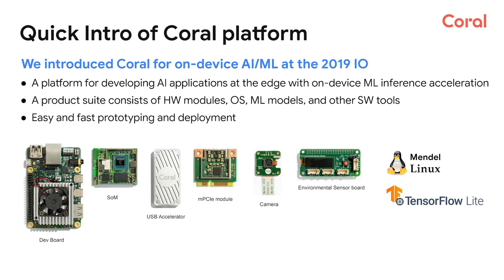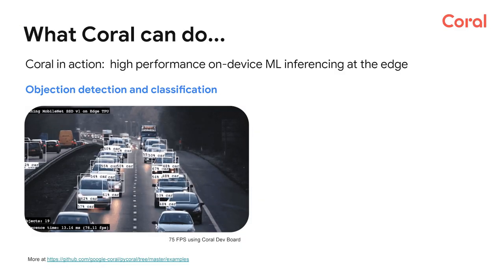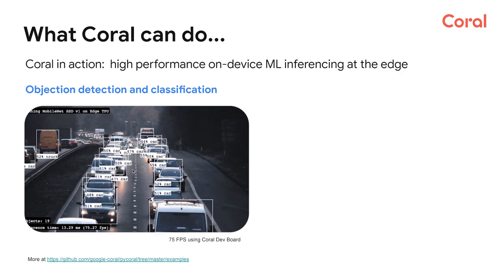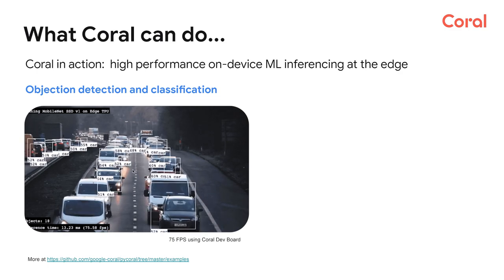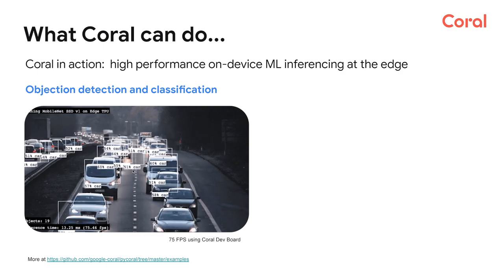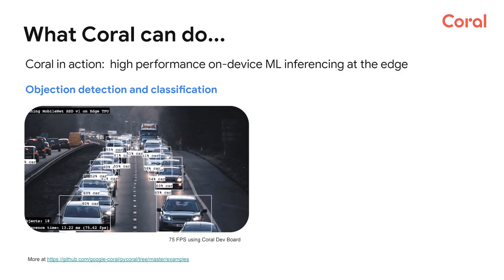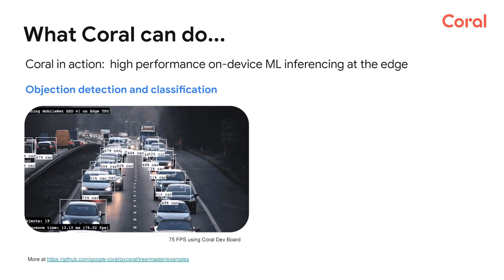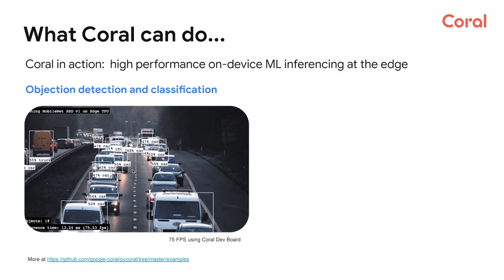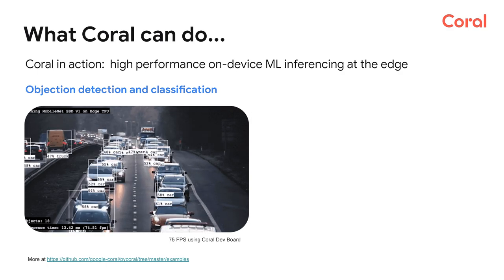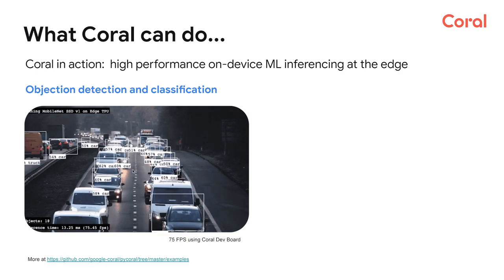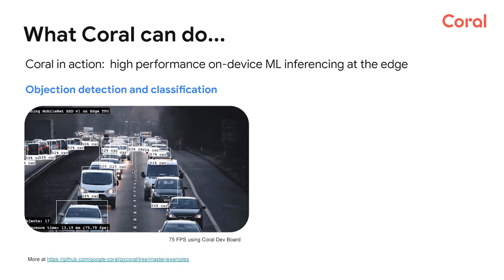Let me show you some typical AI vision applications to see Coral in action. Here's an example of a machine learning model performing object detection on Coral hardware. You can see the application is able to detect a large number of automobiles on the highway in a live video. Notice how fast the detection is taking place, shown by the 75 frames per second refresh rate at the lower left corner. This demonstrates the high performance capability of Coral hardware to perform machine learning acceleration right on the device.